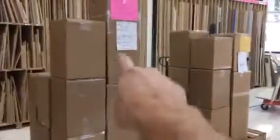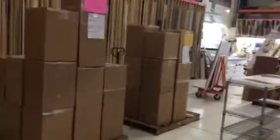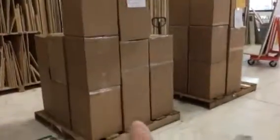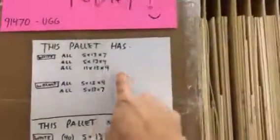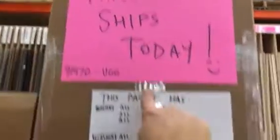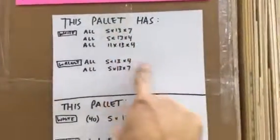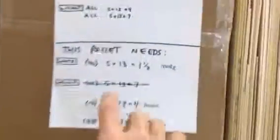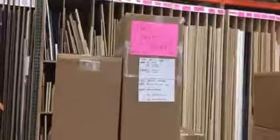Over here we have a pallet. As soon as a project gets cut and units start being brought over, it gets cut, and as soon as a unit's done it gets put into a box. The box is brought over onto its pallet and we instantly create a sheet like this that tells us what the pallet has currently, what the pallet needs, and when it ships out. We can see all of the sizes, what it needs, and when somebody brings something over and sets it on the pallet we mark it off and put it up here.